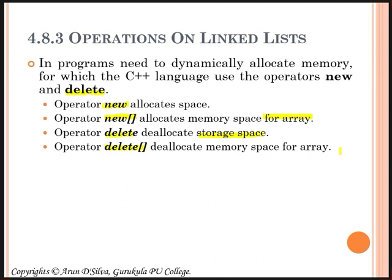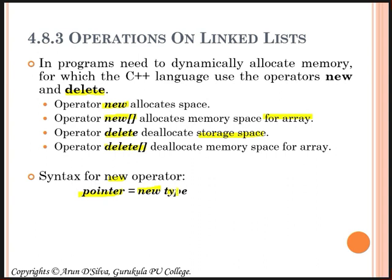The 'new' operator is followed by a data type specifier. If more than one element is required, the number is given within brackets, and it returns a pointer to the beginning of the newly allocated block of memory. The syntax is: you take a pointer variable, use the operator 'new', and then specify the type. This pointer will be allocated space for whichever type you specify — it can be an integer, a float, or any structure type.